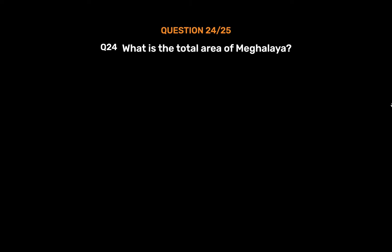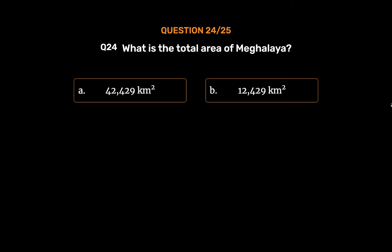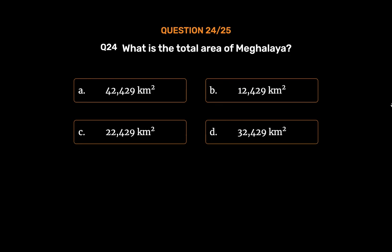Question number 24. What is the total area of Meghalaya? Option A: 42,429 square kilometers. Option B: 12,429 square kilometers. Option C: 22,429 square kilometers. Option D: 32,429 square kilometers.